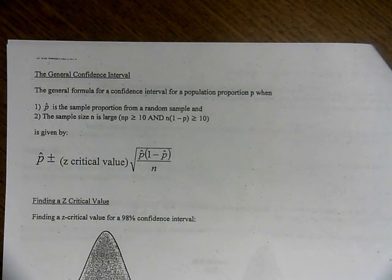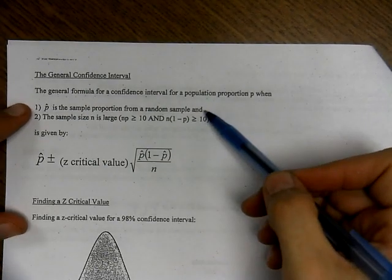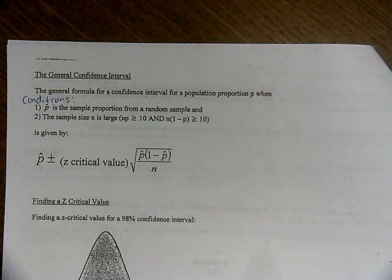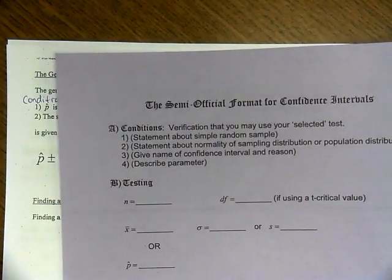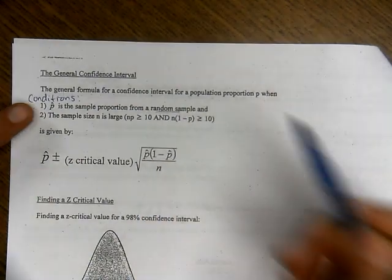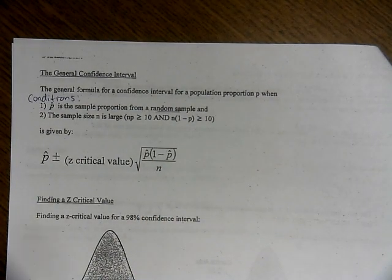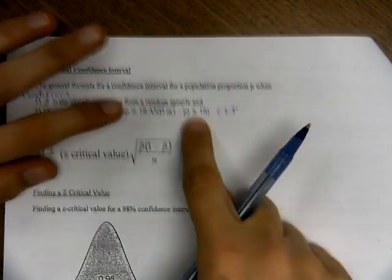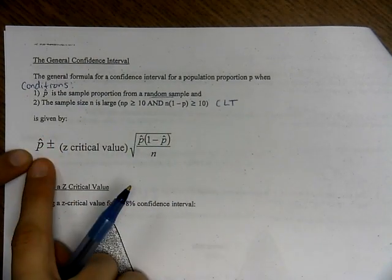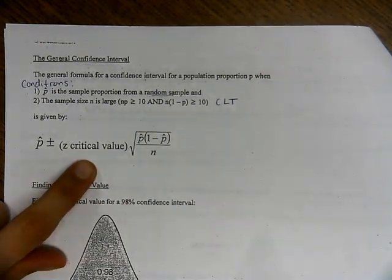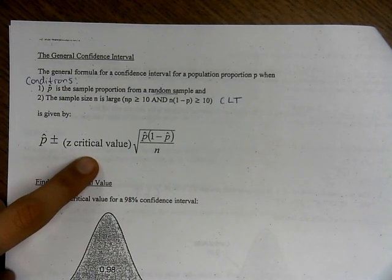So where did I get 1.96? With a confidence interval, there are a few things to look at. We're going to start writing conditions. The general formula is p-hat plus or minus z-critical times the standard deviation. The z-critical value changes depending on your confidence level. For 95% confidence, we use 1.96. That only works for 95% confidence — for other levels, the z-critical value changes.